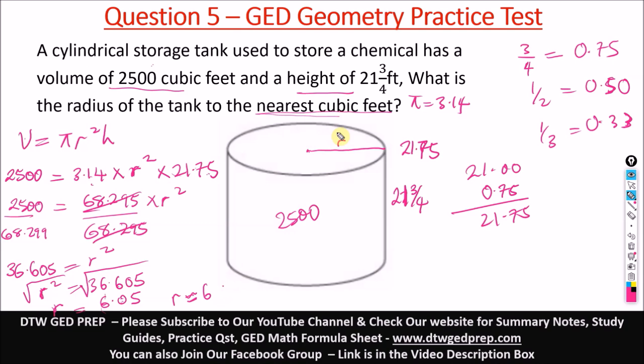So r to the nearest—sorry, this shouldn't be cubic feet, just to the nearest feet—is 6 feet. So this is our answer, 6 feet. You'll see questions like this. The GED questions have a lot of text to get you a bit worried and confused, but all you need to know is just bring out what you need, the values you need. That's all. And apply your formula. So this is the answer.